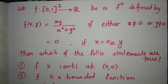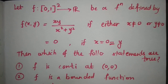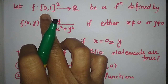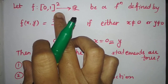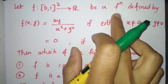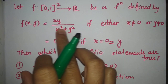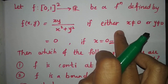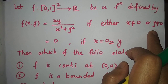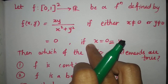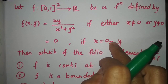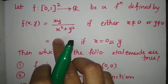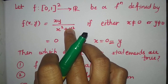Let us solve another question. Let f be defined from [0,1]×[0,1] to ℝ by f(x,y) = xy/(x²+y²) if either x is non-zero or y is non-zero, and f(x,y) = 0 if both x and y are zero. So the function is zero when both are zero, otherwise it is xy/(x²+y²).